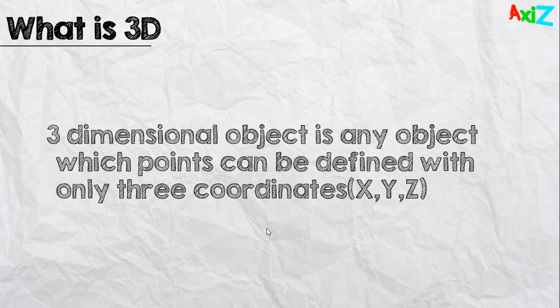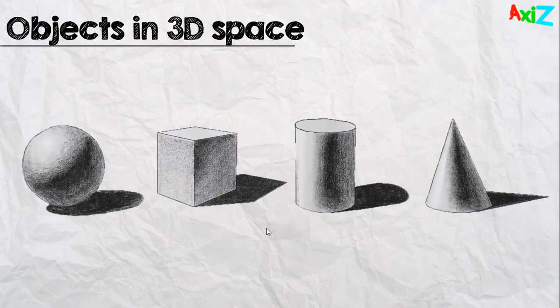And let me tell you about what is a three-dimensional object. A three-dimensional object is any object which points can be defined with only three coordinates. X, Y and Z. Now, I'll explain this in a minute. But first, let me give you some examples of three-dimensional objects. Here you can see a sphere, a cube, a cylinder, a cone.